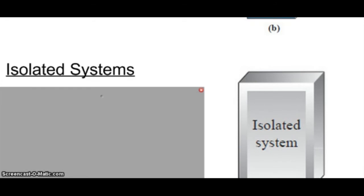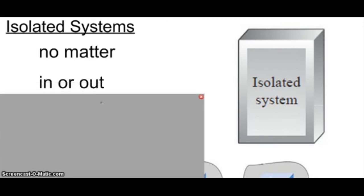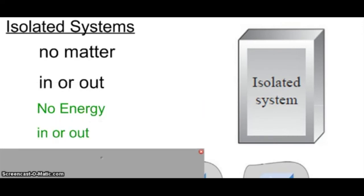The third type is an isolated system. This is what you would expect to be a closed system. Essentially, an isolated system, no matter in or out, no energy in or out. An isolated system is going to be all by itself.